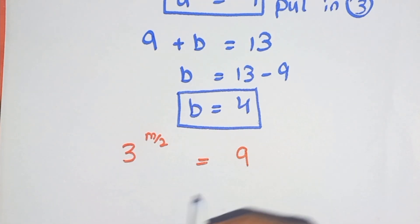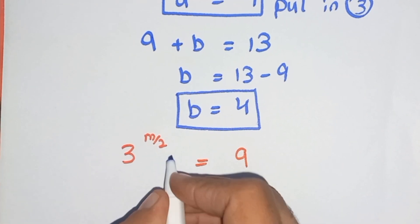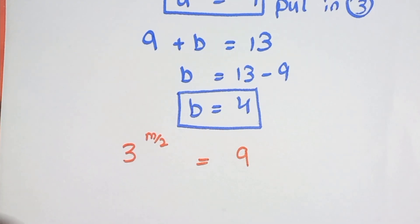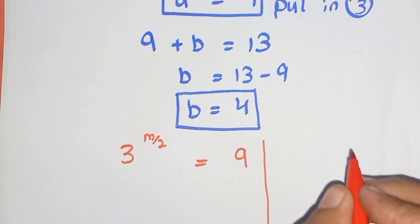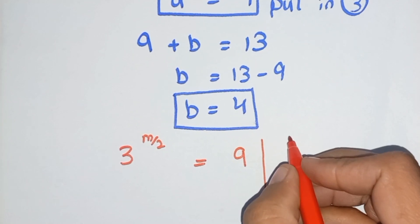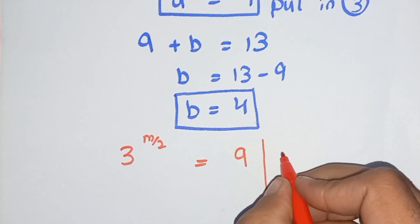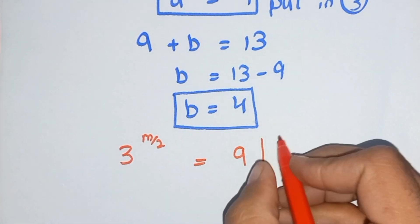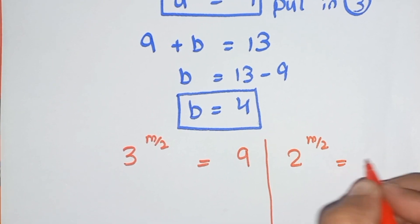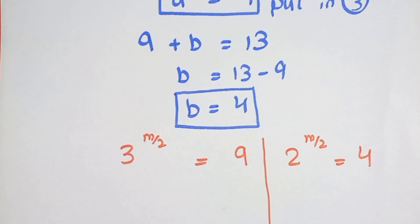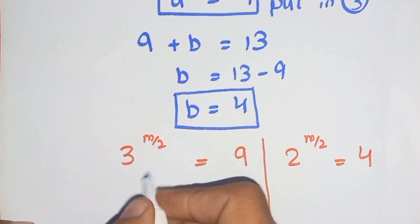We solve this first then solve again. If we consider equation number 2, 2^(m/2) equals 4, solve these two simultaneously.